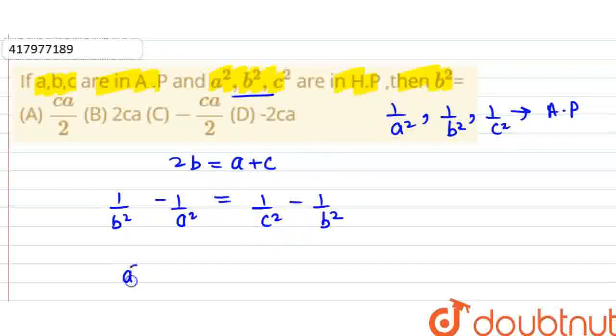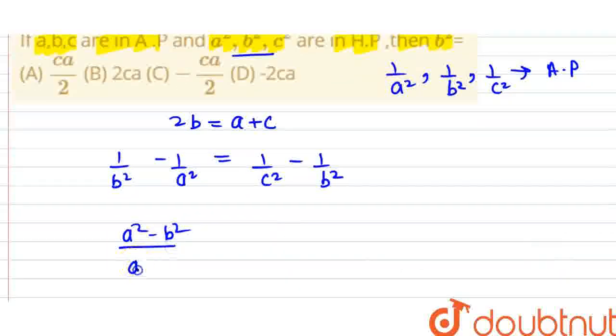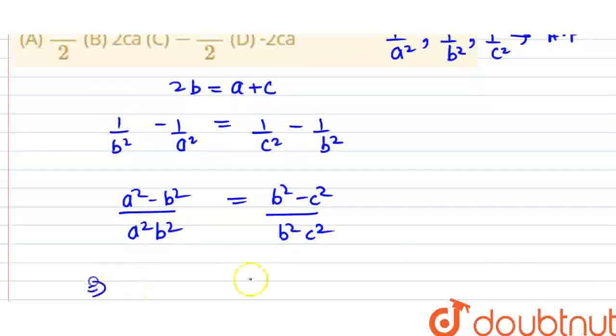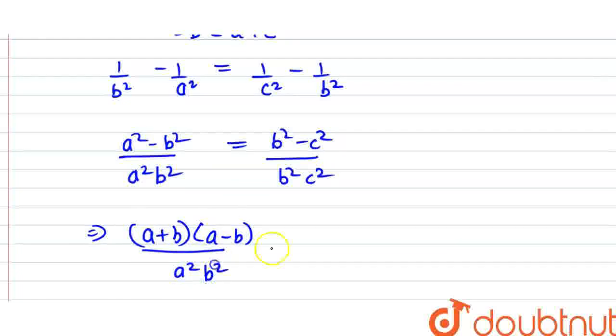Then, we will take the LCM. A square minus B square upon A square into B square. Here we have B square minus C square upon B square into C square. So here A square minus B square creates A plus B into A minus B upon A square B square. And here B plus C into B minus C upon B square into C square.